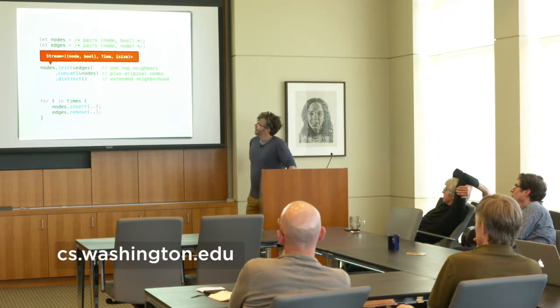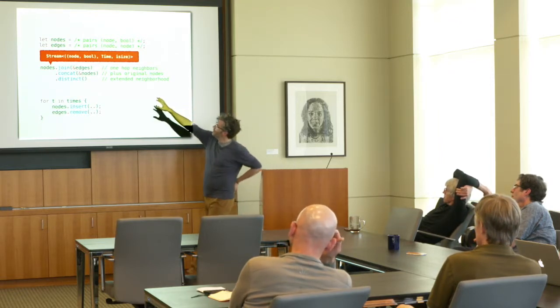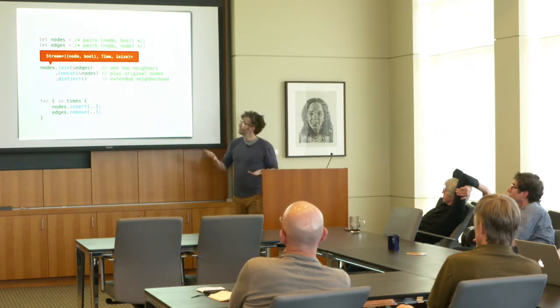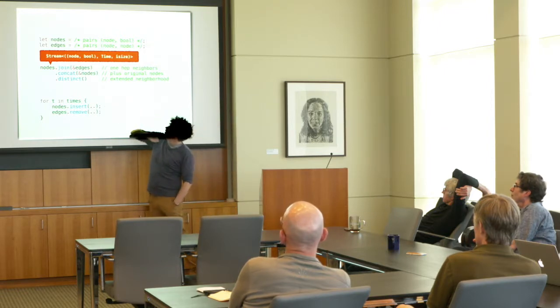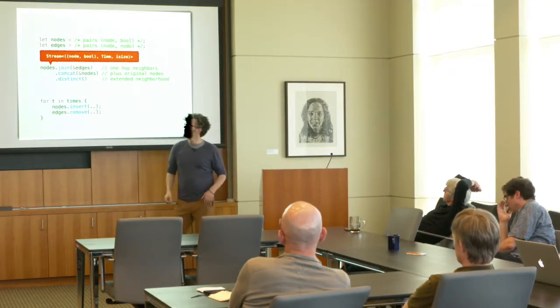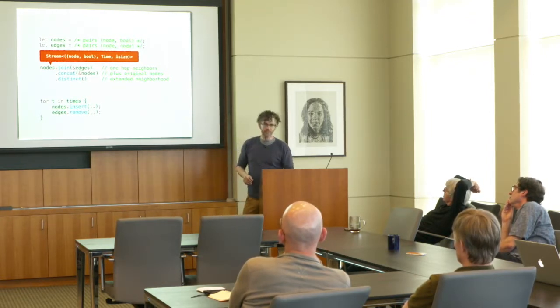These programs look a lot like data-parallel SQL-style things — joins, concats, distinct. In this example, we have nodes in a graph: pairs of a node identifier and a Boolean. We join the set of nodes with a set of edges — there's a match whenever we have an edge from a node we can reach to another node. We add that to our set, giving us the nodes reachable in zero steps and in one step. This computes the one-hop neighborhood of the set of nodes.